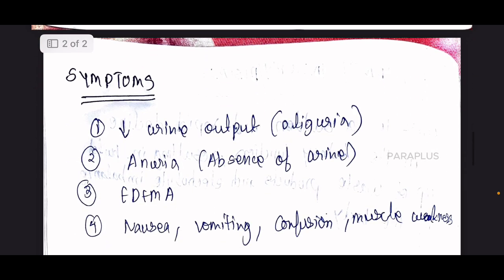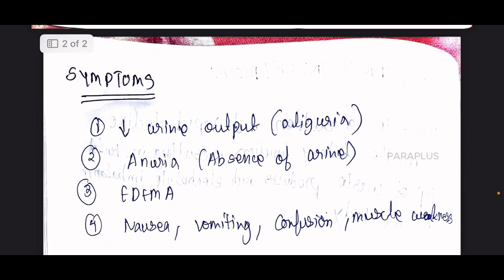The kidney injury then starts. Symptoms include decreased urine output — oliguria — or anuria, which is the absence of urine, or very low urine output.